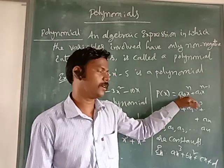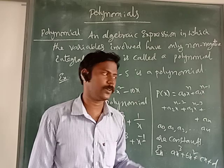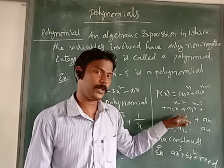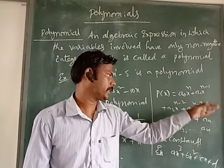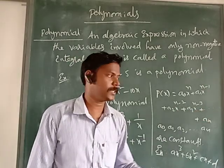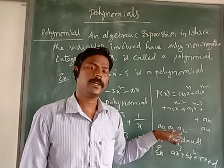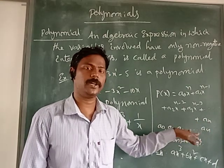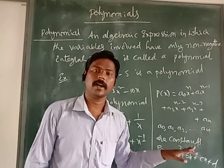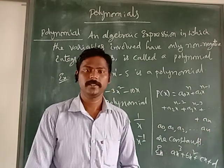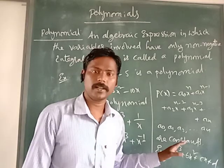General form of a polynomial: a₀xⁿ + a₁xⁿ⁻¹ + a₂xⁿ⁻² + a₃xⁿ⁻³ + ... + aₙ. Here a₀, a₁, a₂, and so on up to aₙ are called constants.